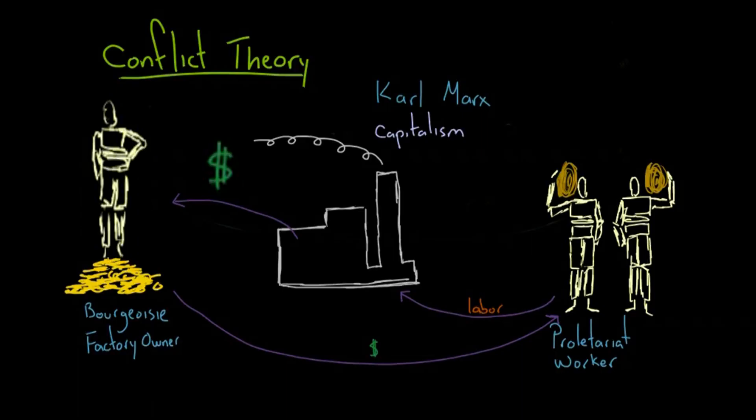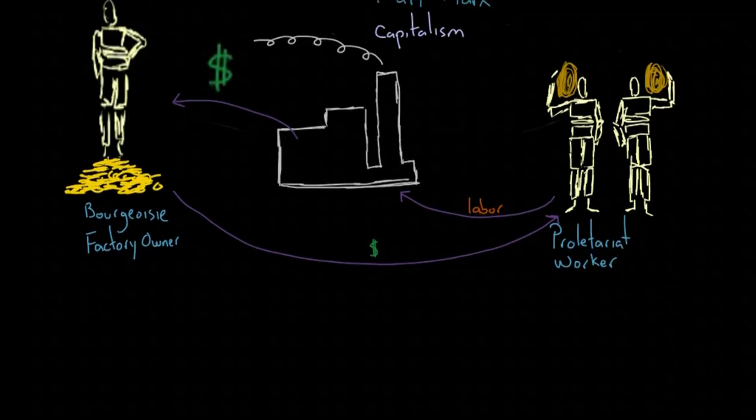Marx created a model which proposed that a society where one group exploited another group economically would actually contain the seeds of its own destruction. The existing generally accepted state, or thesis, of a society would cause the formation of a reaction, or antithesis, that opposed the accepted state.